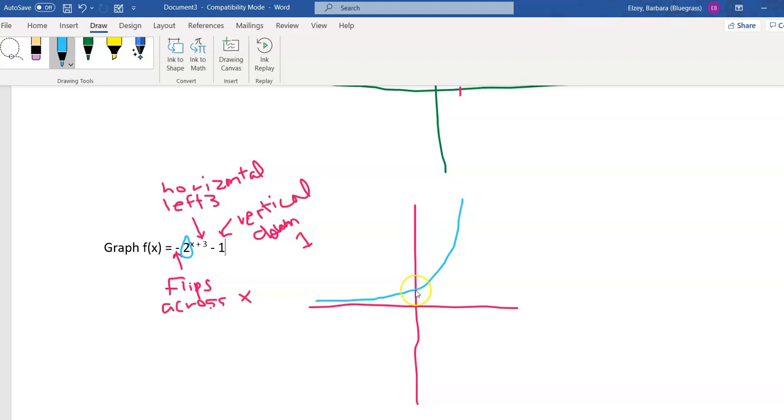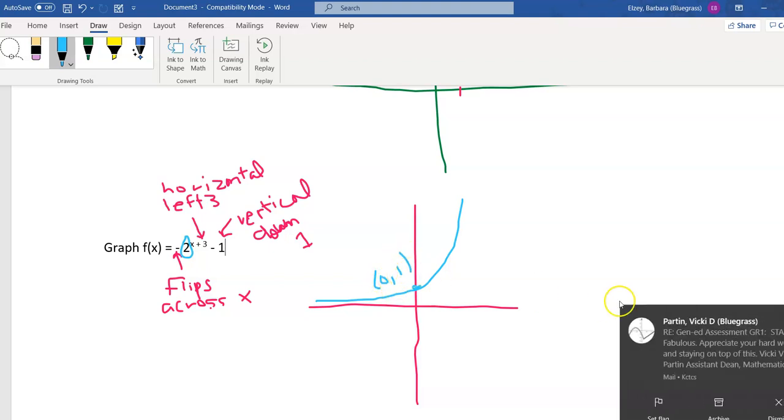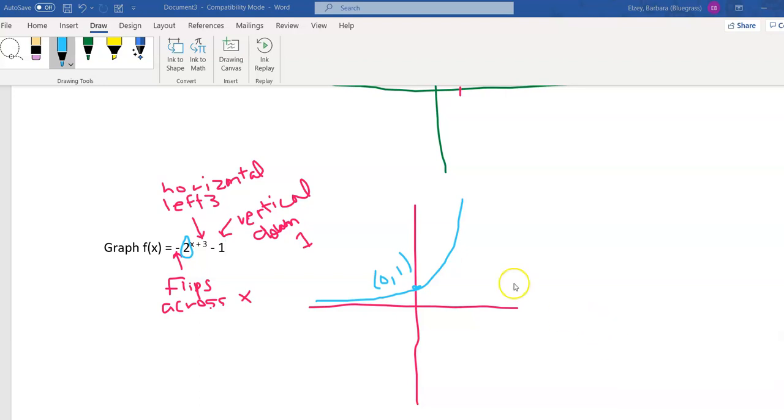Looks like this. It always goes through 0, 1. So I'm going to mark that point. And 1 and the base. And our base is 2. So it goes through 1, 2. So this point right here is 1, 2. So as we do all the other things to it, we're going to change these points right here.